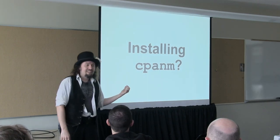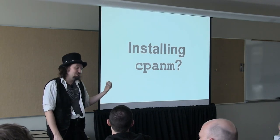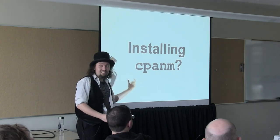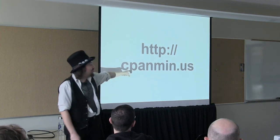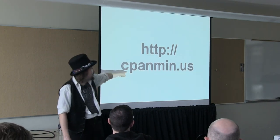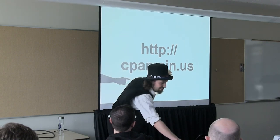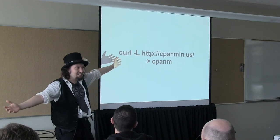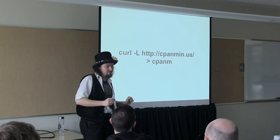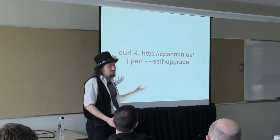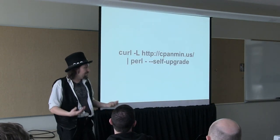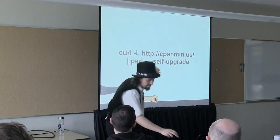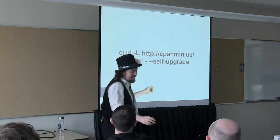There's one gotcha — how do you install cpanminus? Because you sure as hell don't want to fire up the CPAN shell. Luckily, installing cpanminus is very simple. You go to this URL — which is easy to remember because it's cpanminus — and you redirect that to a file, and it's installed. It's one single file. You can also redirect it to Perl and it will check for updates. But you can just go to this page and save it. You should check the hash first — don't be a cowboy.